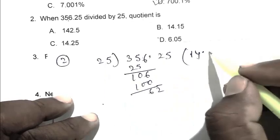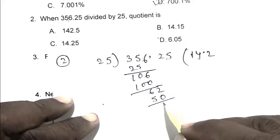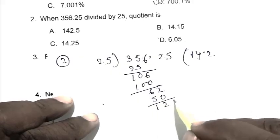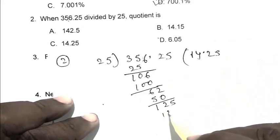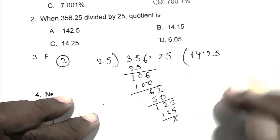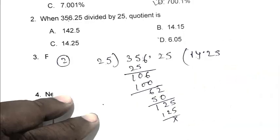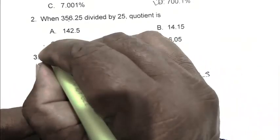2 times 25 is 50, remainder 5. 5 times 25 is 125. So the quotient is 14.25. C is the right answer.